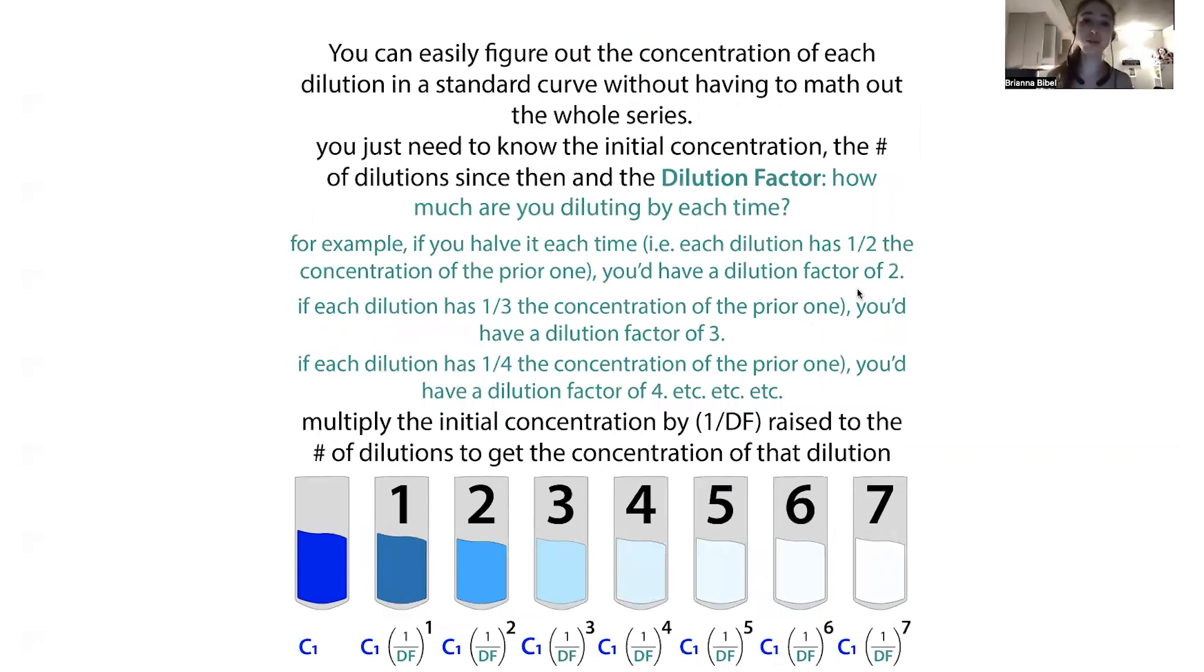This dilution factor is basically how much are you diluting by each time. If you're halving something, then each dilution would have half the concentration of the prior one, and your dilution factor would be two. If you were thirding it, you would have a dilution factor of three. If you were quartering it, it would be a dilution factor of four, et cetera. You can multiply the very initial concentration by one over dilution factor - this would be one half, one third, one quarter, et cetera - raised to the power of that dilution. This is really helpful when you're making solutions in the lab.